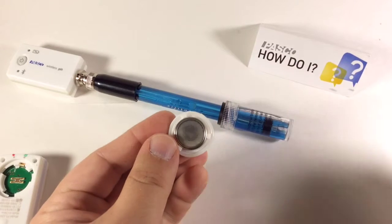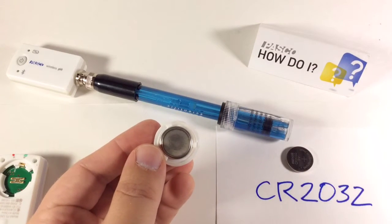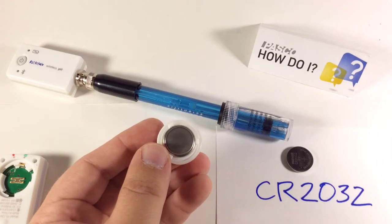So, there is the coin cell battery. This is a fairly common coin cell battery. CR2032 is the model. You can get this from Pasco and from many retailers around the world.